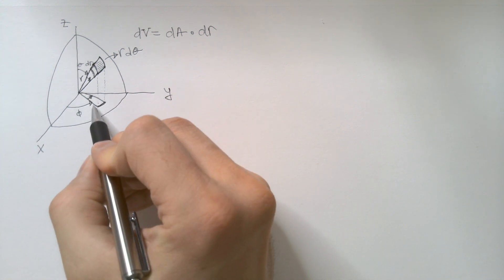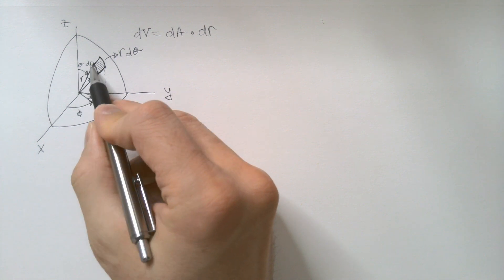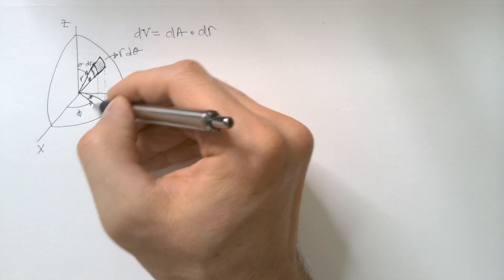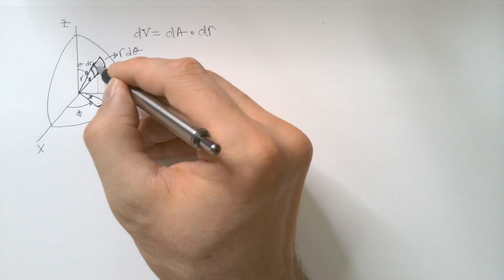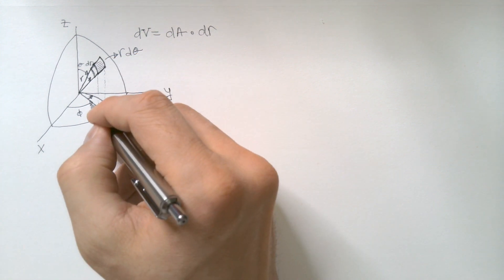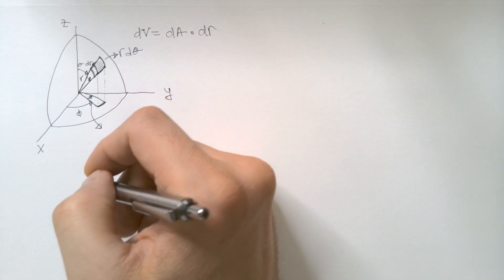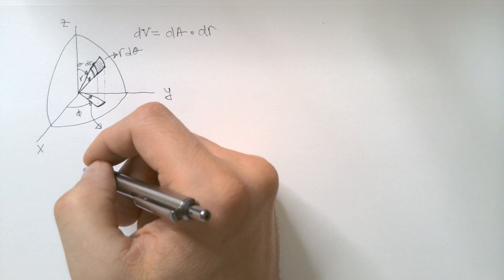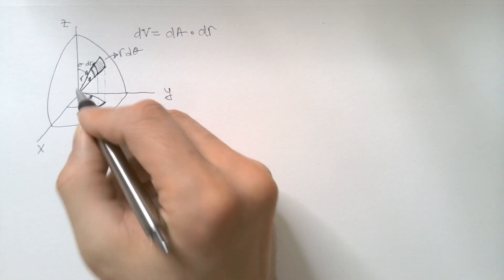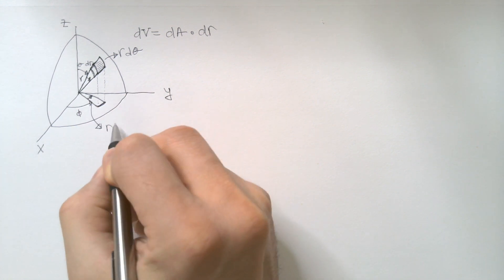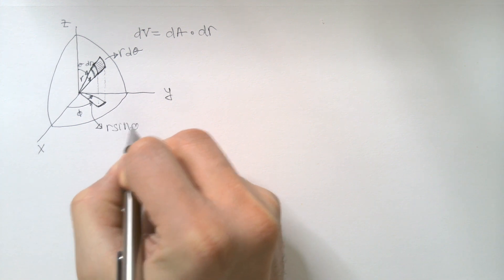Now, you have to know that this radial length is not r. Because look, this over here is projection of this element. But we can quickly, from geometry, conclude that this radial length is r sinθ. How is that clear?